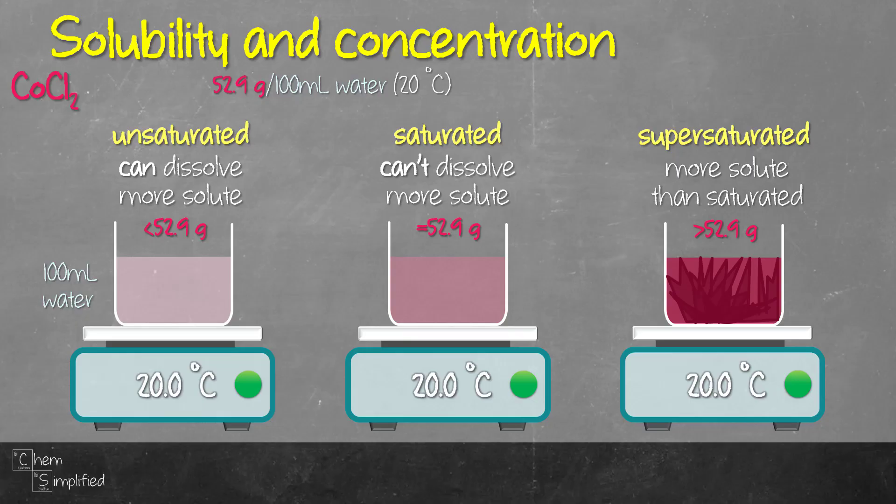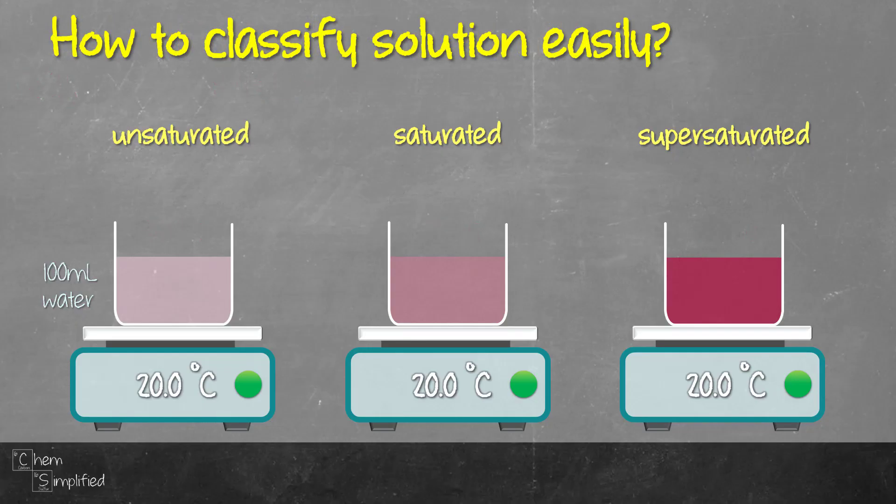So that's basically the three types of solution. We have unsaturated, saturated and supersaturated. As promised at the beginning of the video, we're going to figure out how we can classify the type of solution very quickly, experimentally. So basically what we can do is just add a little bit of solute to the solution. If the solute dissolves into the solution, then what we have is an unsaturated solution. Now if the solute doesn't dissolve into the solution, that means the solution that we have is already saturated. And if the solute causes crystal to form, what we have is a supersaturated solution.